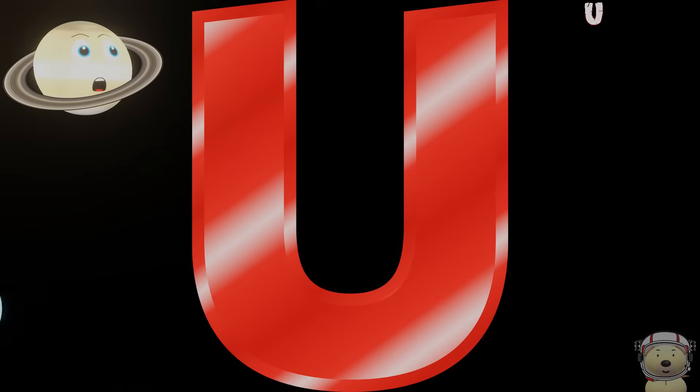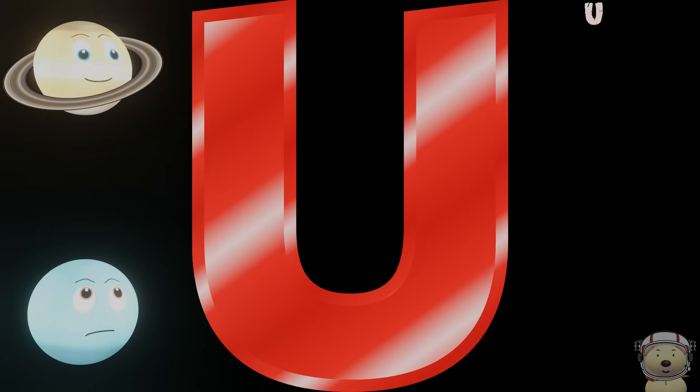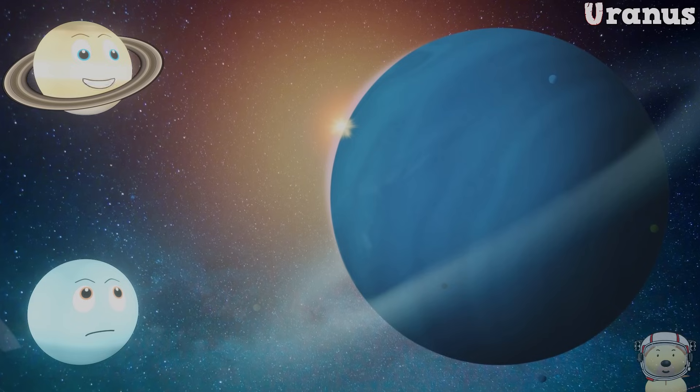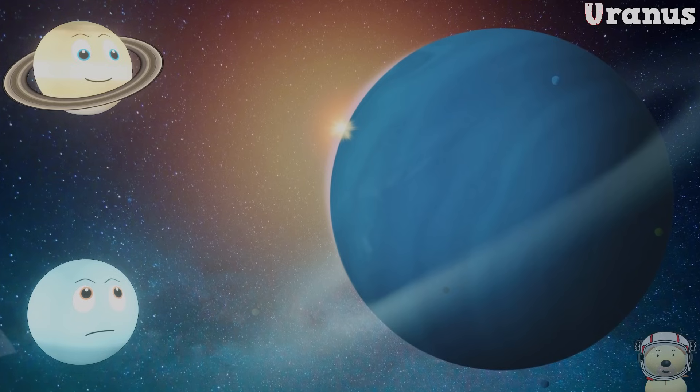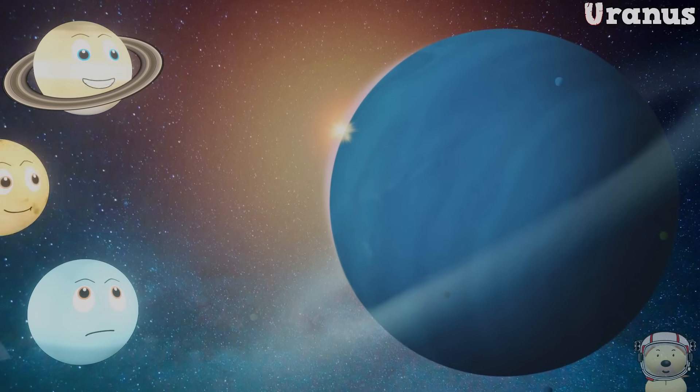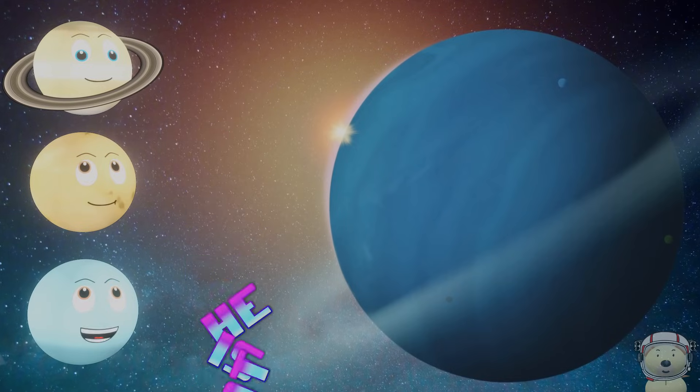U is for... uh-hem... fine, Uranus. Seventh planet from the sun, spins on his side, he is not fun. Stop that!